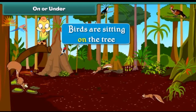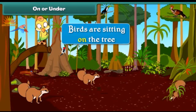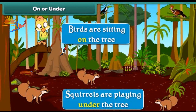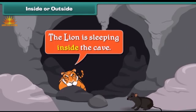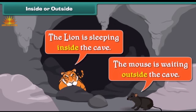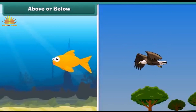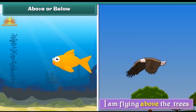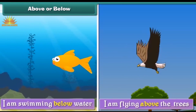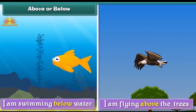Birds are sitting on the tree. Squirrels are playing under the tree. The lion is sleeping inside the cave. The mouse is waiting outside the cave. I am flying above the trees. I am swimming below water.